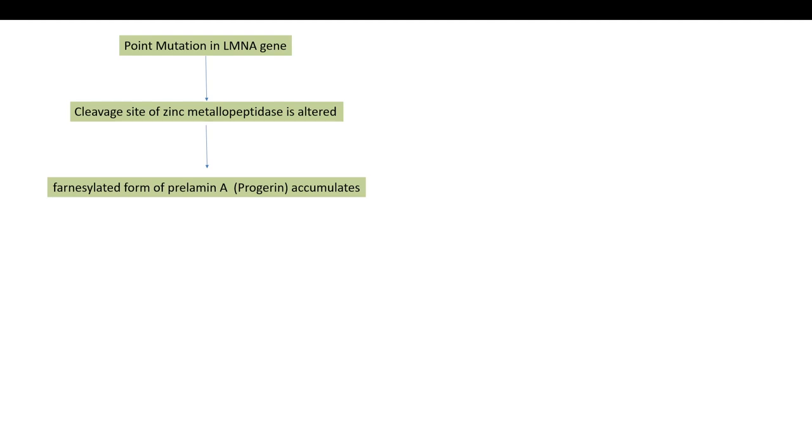Let us now summarize what we have learned so far. So there is a point mutation in the lamin A gene which is the starting event which alters the cleavage site of zinc metallopeptidase. As a result, a farnesylated form of prelamin A accumulates and this form is also known as progerin protein. This progerin remains anchored to the nucleus and this leads to misshaped and distorted nucleus. And this distortion of nucleus by some mechanism leads to premature aging of progeria.